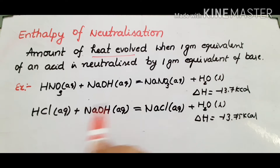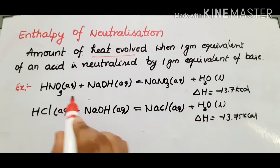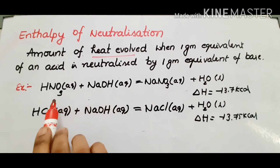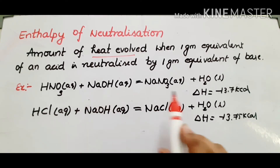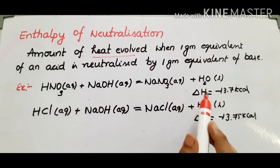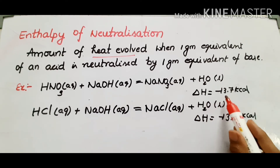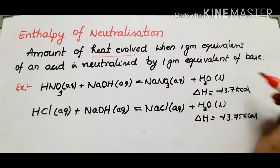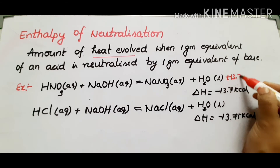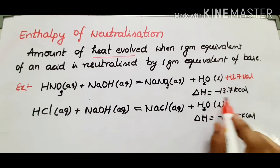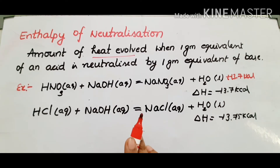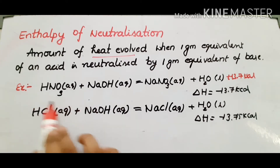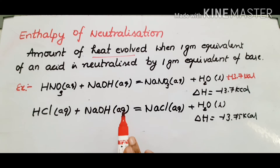I will show you a strong acid and strong base example. Nitric acid and NaOH is strong base. We mix these two and form NaNO3 aqueous solution and water. This gives minus 13.7 kcal. Delta H will be minus because heat evolved means it is an exothermic reaction. For exothermic reactions, delta H is always negative because the energy of the reacting system decreases.